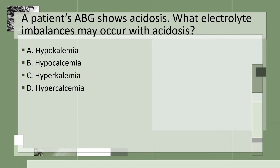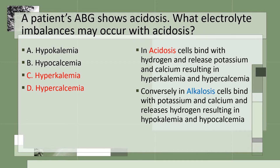This question asks what electrolyte changes we're going to have with acidosis. In acidosis we will have hyperkalemia and hypercalcemia. In alkalosis you will have hypokalemia or hypocalcemia. You can remember this by thinking someone is hyper when they're on the drug acid — that's how to remember hyperkalemia and hypercalcemia with acidosis.